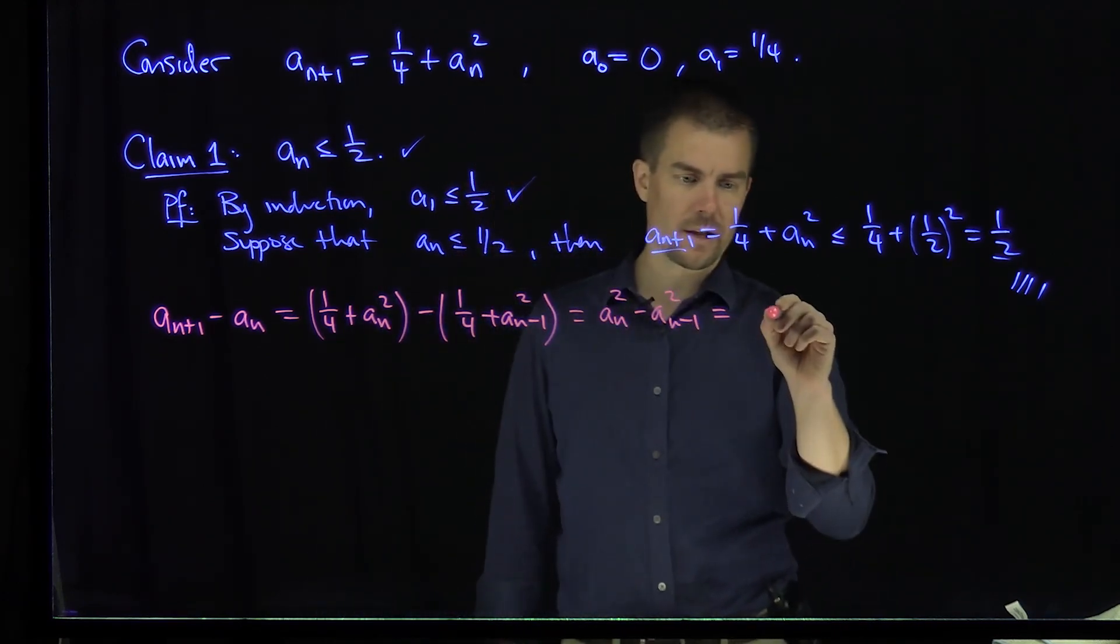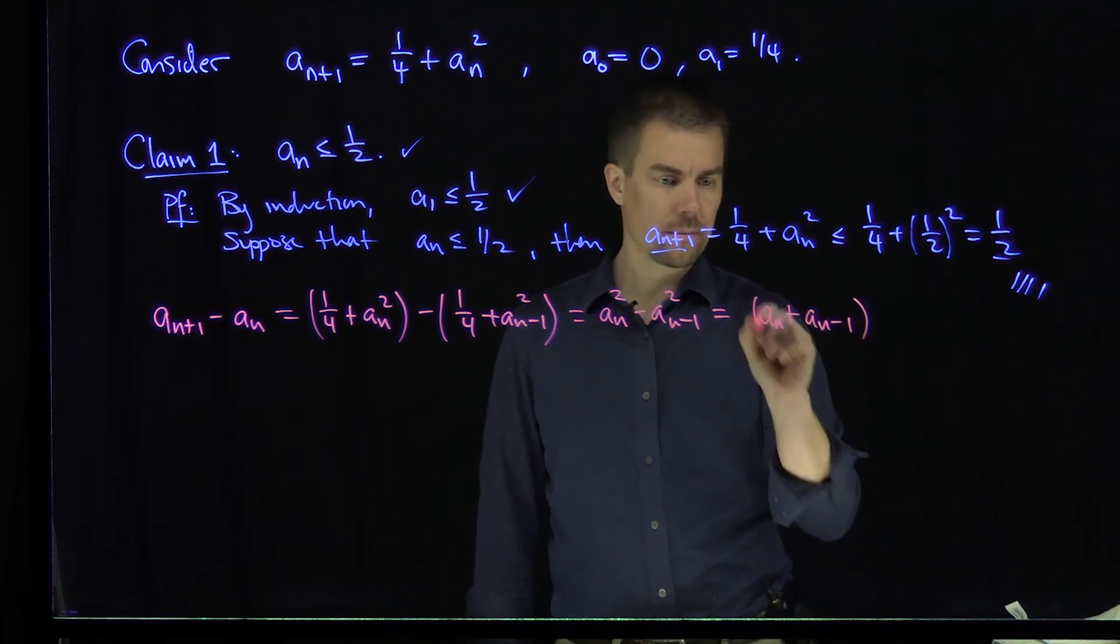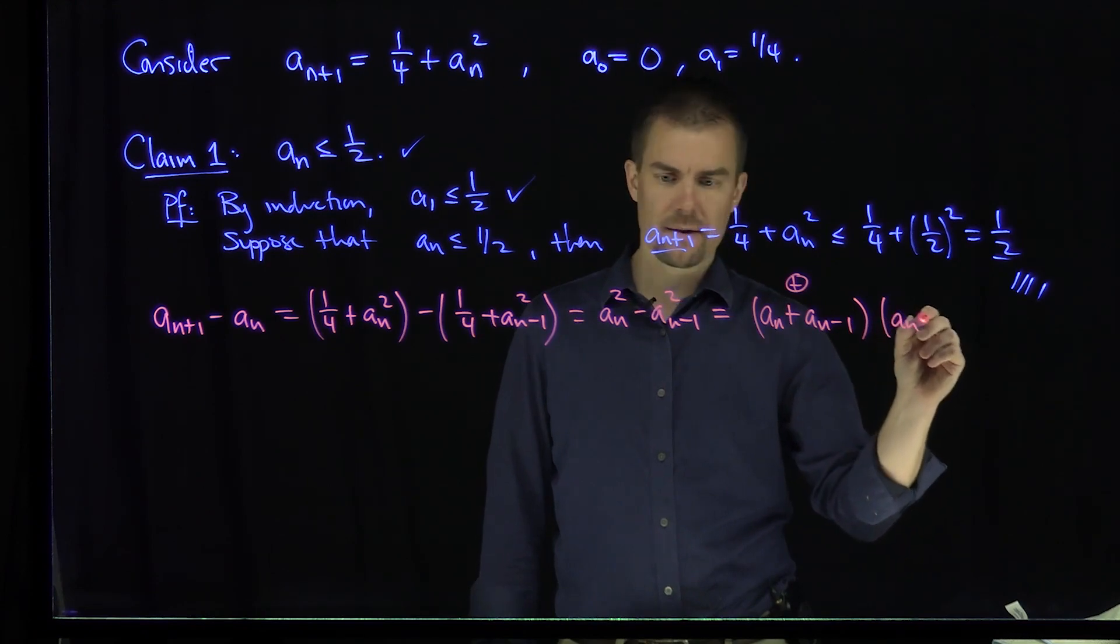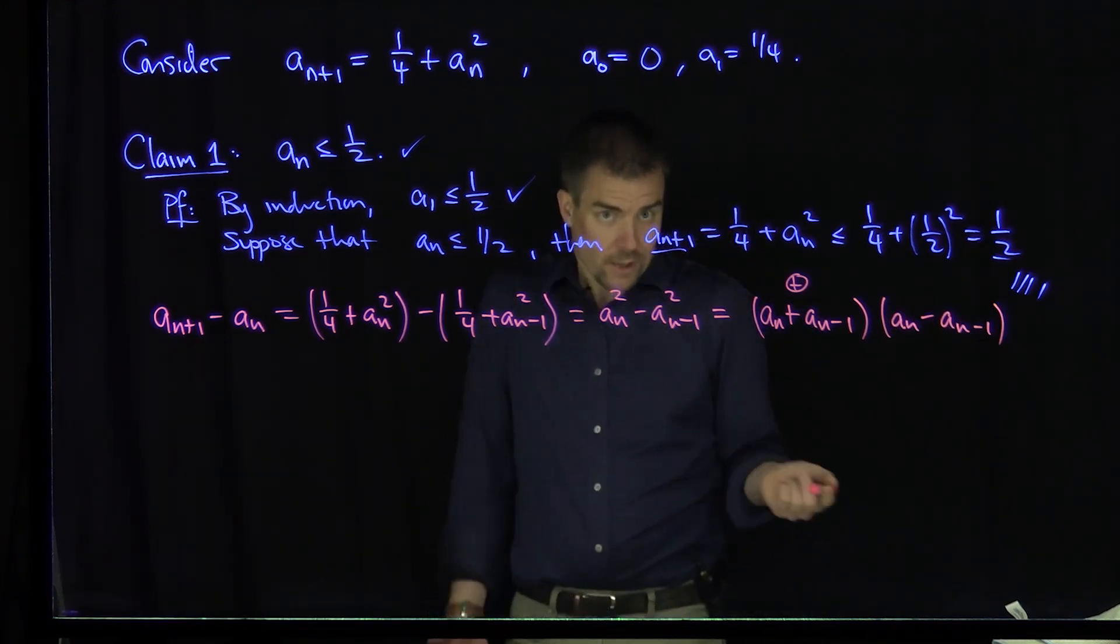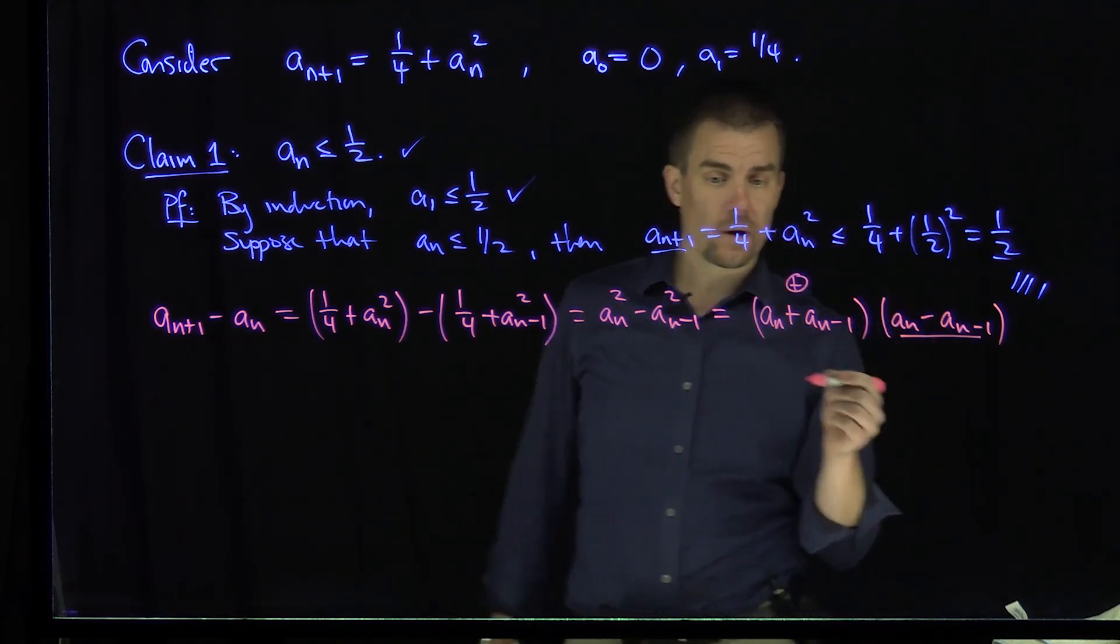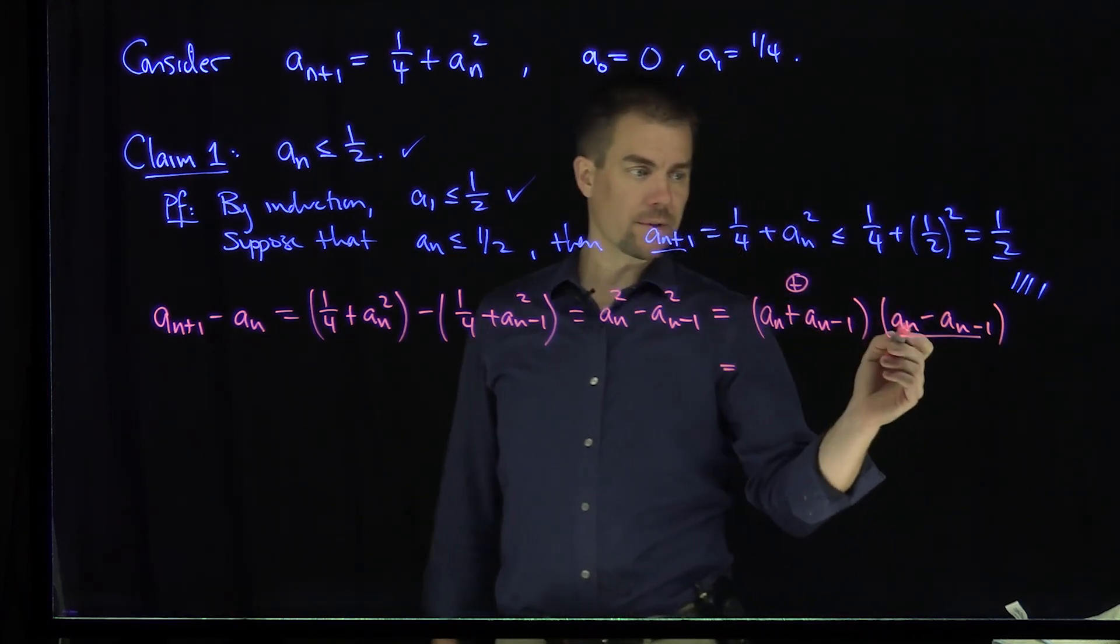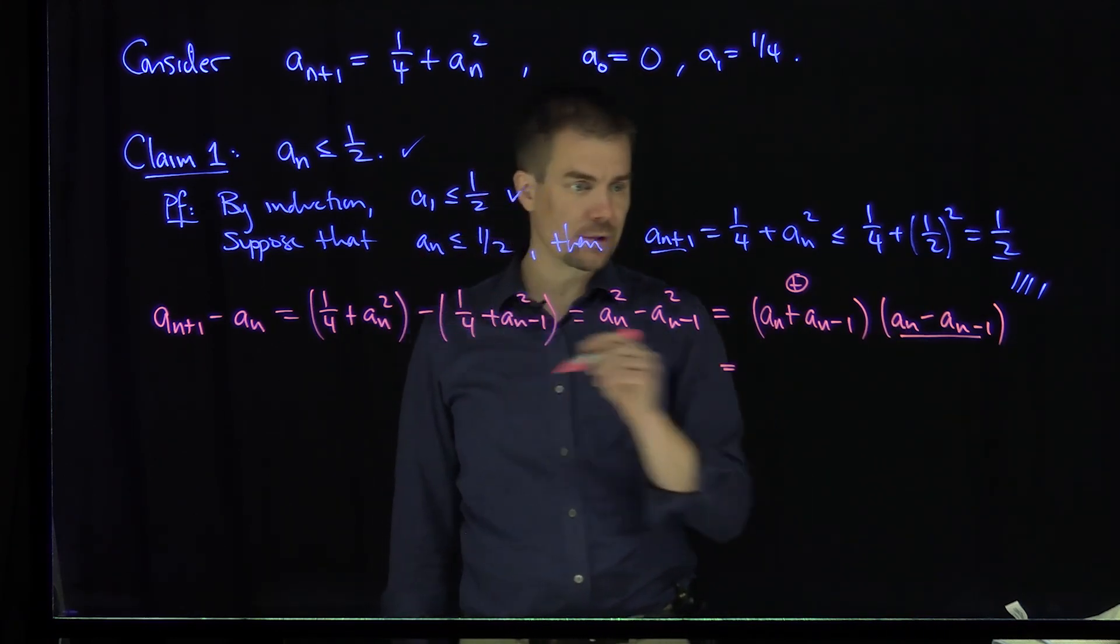I can write that as (a_n + a_{n-1}). That's a positive expression. And then I have (a_n - a_{n-1}). That could potentially be negative. But I can do the same trick. I can complete the square again. I can write this as a_{n-1} - a_{n-2}.